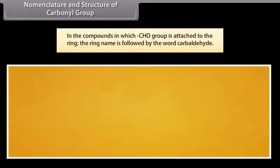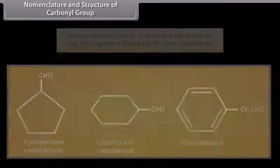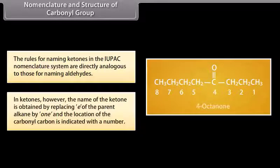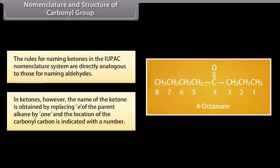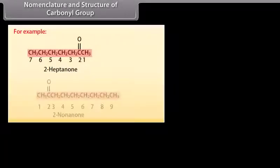In compounds in which an aldehyde group is attached to a ring, the ring name is followed by the word 'carbaldehyde'. The rules for naming ketones in the IUPAC system are directly analogous to those for naming aldehydes; however, the name is obtained by replacing 'e' of the parent alkane with 'one', and the location of the carbonyl carbon is indicated with a number. For example: 2-heptanone, 2-nonanone.